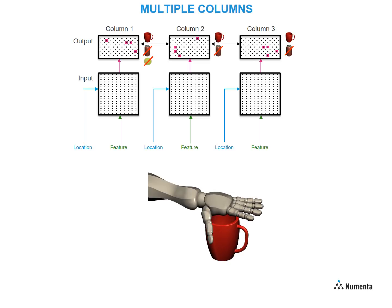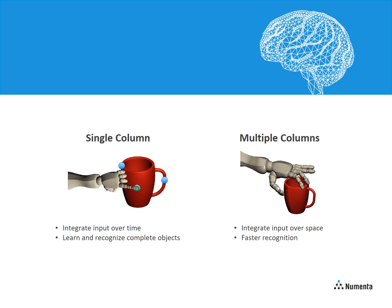By using three fingers at a time, the network can recognize the object with fewer touches compared to a single column. In the brain, there are usually many columns operating in parallel, and inference can often occur with a single grasp, or in the case of vision, with a single glance. In summary, each column integrates inputs over time, so that individual columns can learn and recognize complete objects. Multiple columns integrate inputs over space, so that recognition can occur faster.